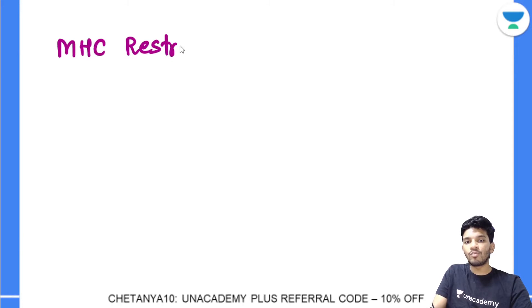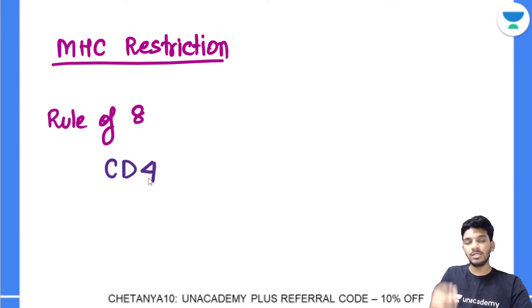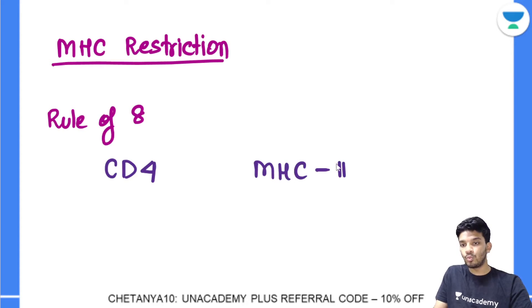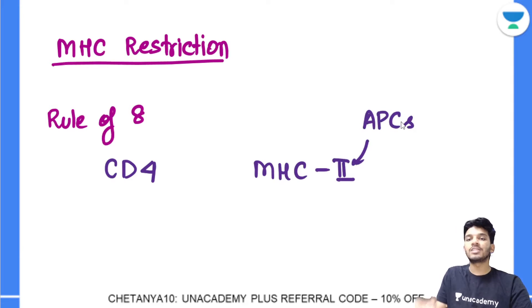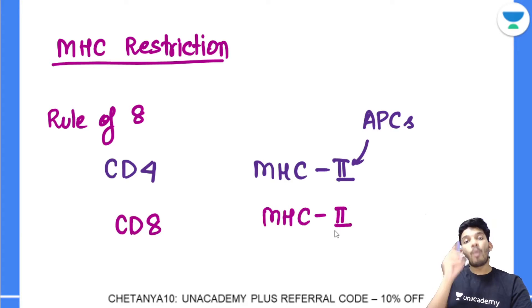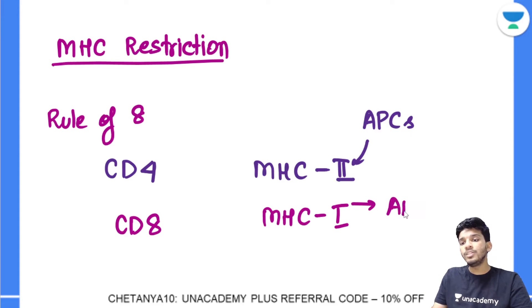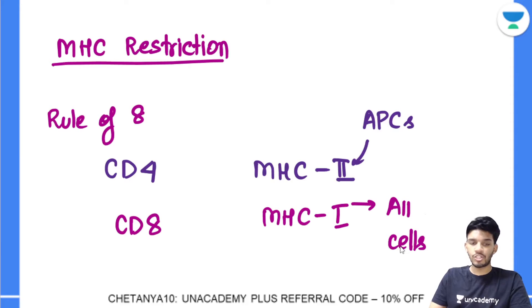The principle called MHC restriction involves the rule of 8. CD4 cells can only recognize a polypeptide antigen presented with the help of MHC2, which is only present on antigen-presenting cells such as macrophages, dendritic cells, and B cells. On the other hand, CD8 cells recognize MHC1 — they can only recognize polypeptide antigens presented in association with MHC1, which is present on all nucleated cells — essentially all cells except RBCs.